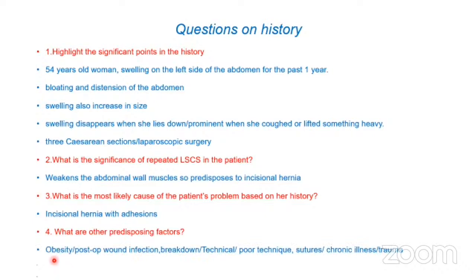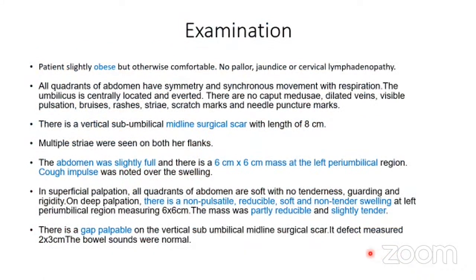The predisposing factors include: obesity, post-operative wound infection, post-operative wound breakdown, technical inadequacies during surgery and poor technique, poor sutures, chronic illness, and trauma to the abdominal wall. Next we come to the examination of this patient.